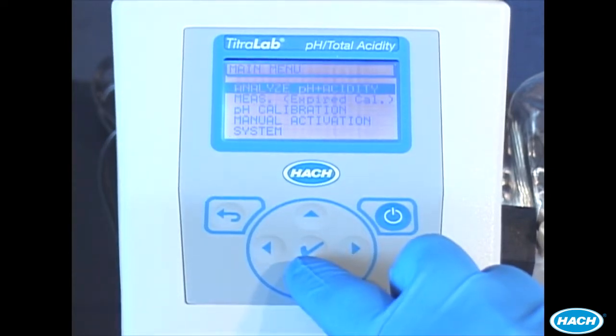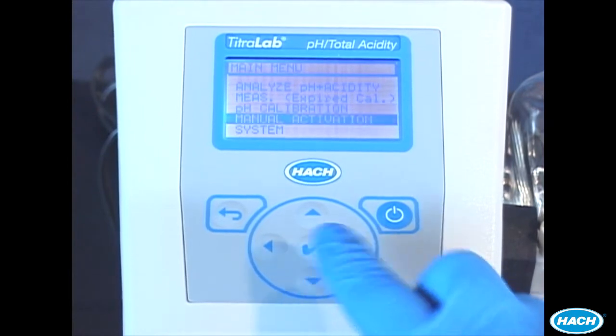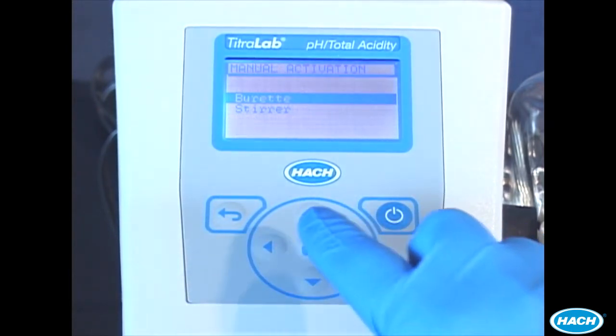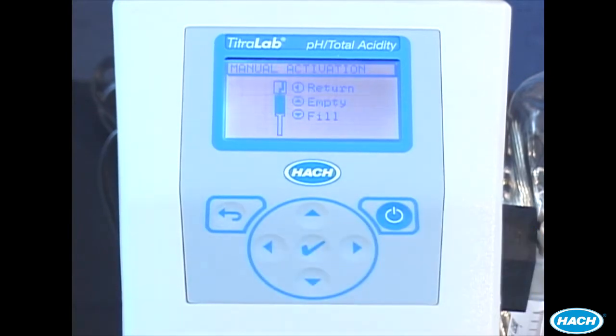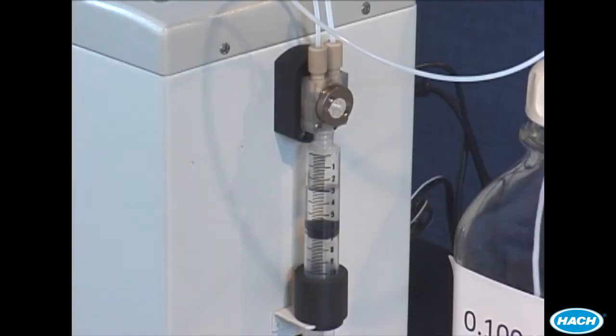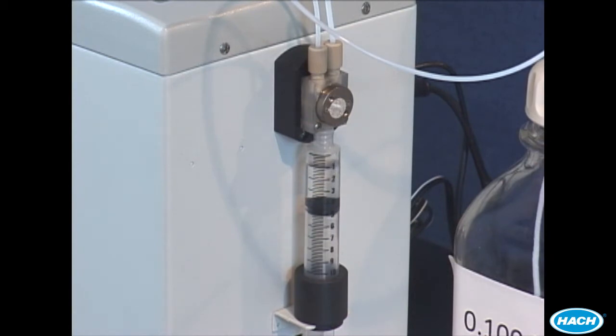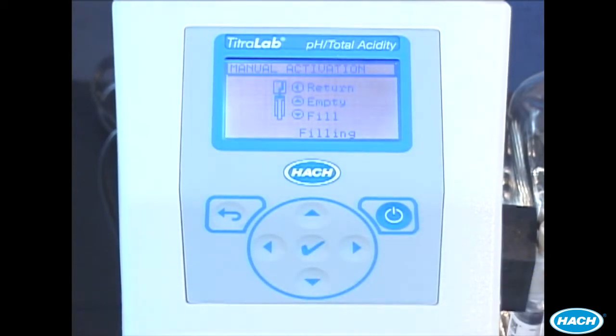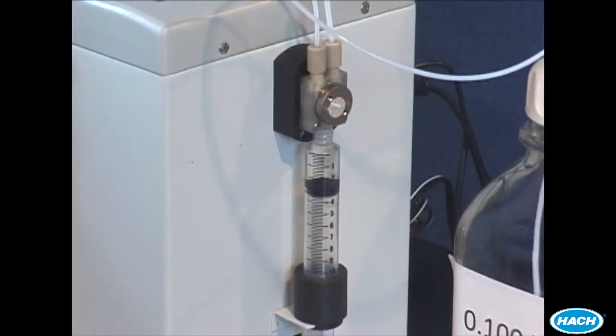Select manual activation, burette and empty. The piston inside the burette will travel up. When the burette has stopped press fill. Repeat the empty and fill procedure to ensure all the tubes are filled with fresh titrant.